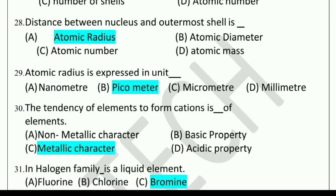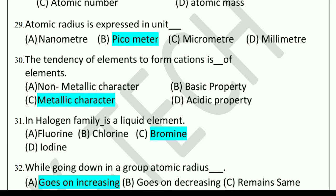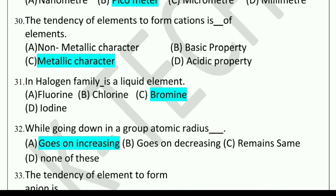Distance between nucleus and outermost shell is atomic radius. Next question: Atomic radius is expressed in unit dash. Options: nanometer, picometer, micrometer, or millimeter. The answer is picometer. Next question: The tendency of an element to form cations is dash. Options: non-metallic character, basic property, metallic character, or acidic property. The answer is metallic character.